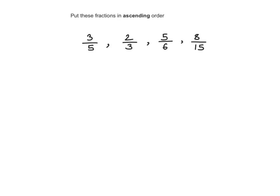Here we are being asked to order these fractions in ascending order. Ascending means smallest to largest. Descending means largest to smallest. So we need to order these fractions from smallest to largest.